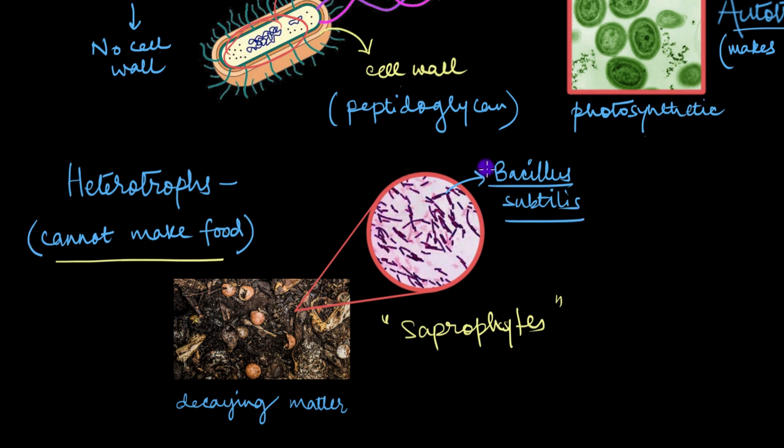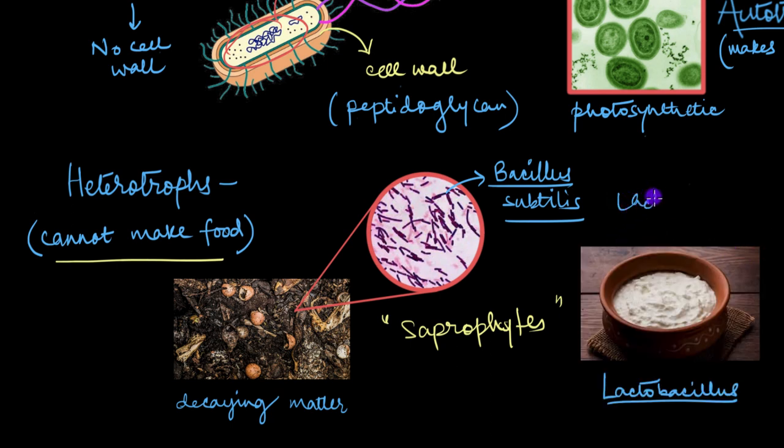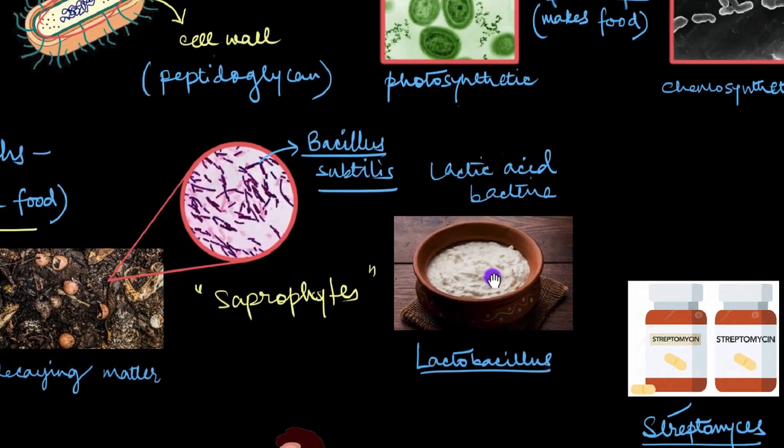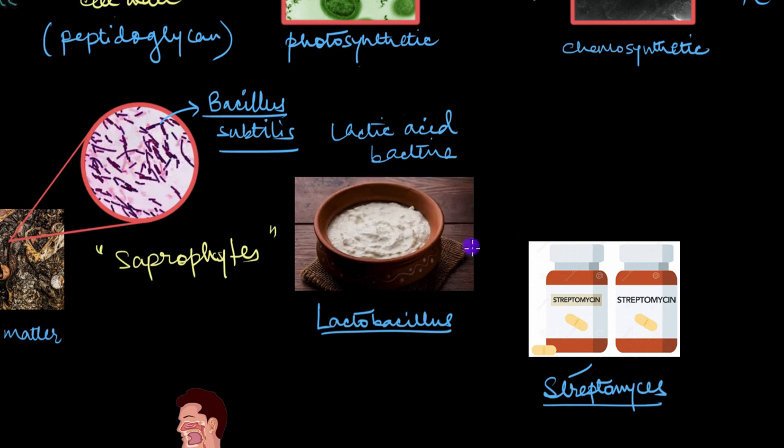Other than cleaning up, bacteria have also become superstars in the field of biotechnology. They help us in the production of many things, including food. For example, there are some heterotrophic bacteria called lactic acid bacteria, which help us in making curd from milk. And an example of that is this bacterial genus called Lactobacillus. This is lactic acid bacteria. And other than this, there are some bacteria which also help us in the production of antibiotics. So these are antibiotics. And as you can see that bacteria also help us in the production of antibiotics. And an example of that is Streptomyces.